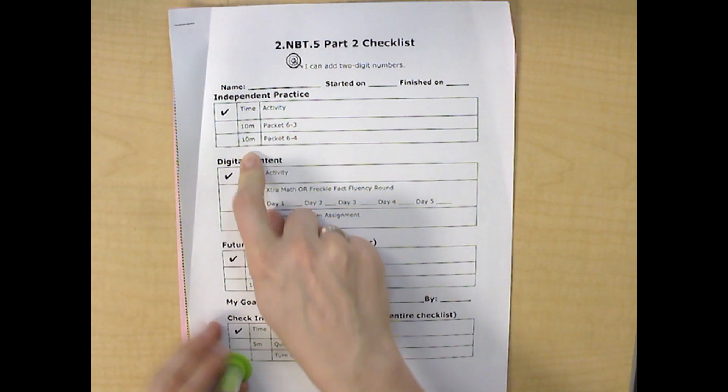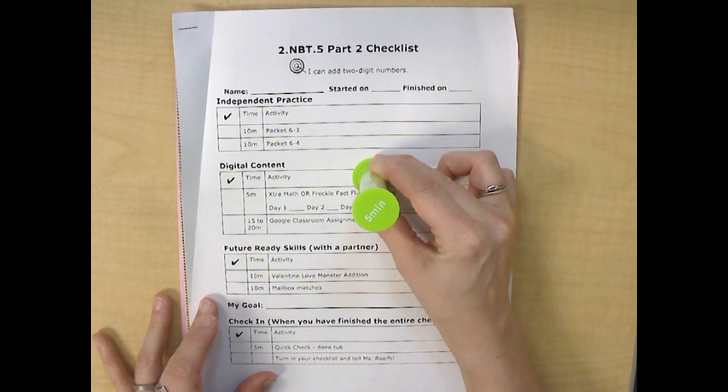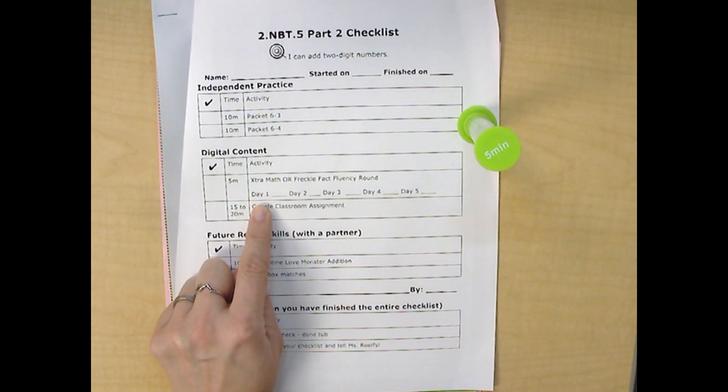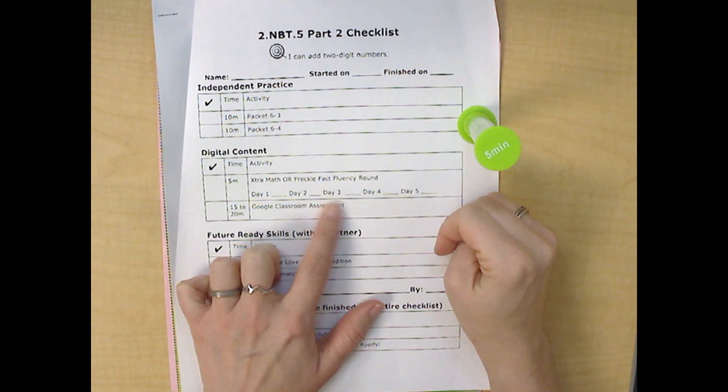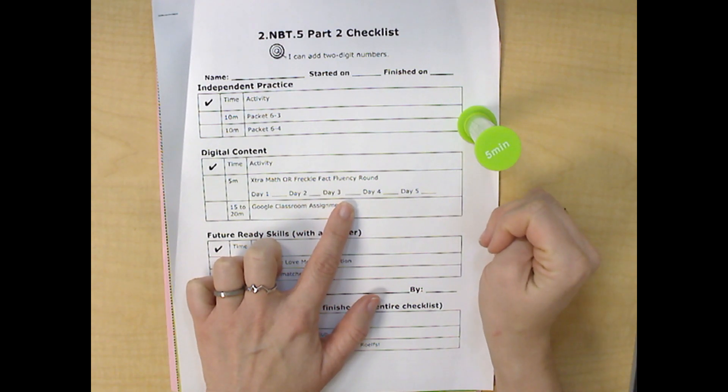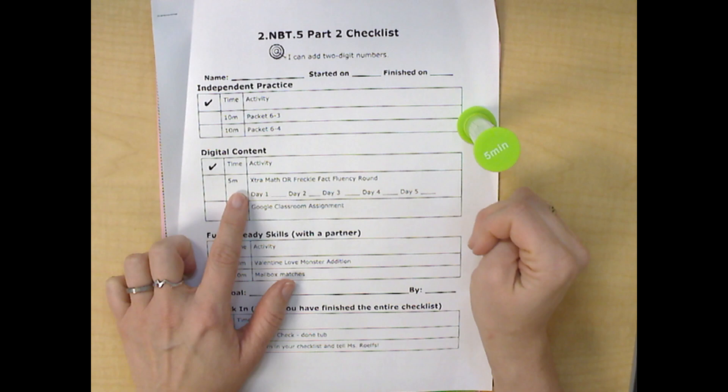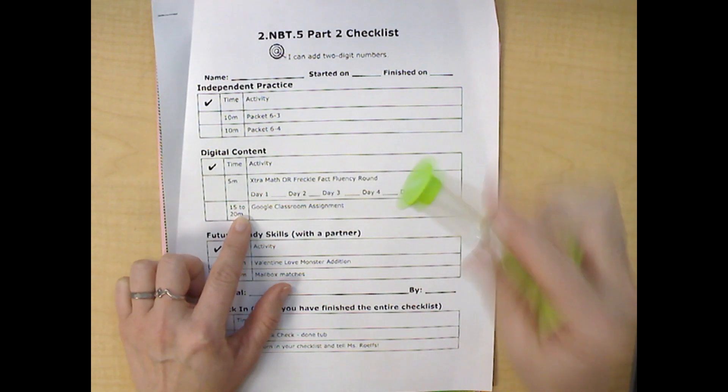These say 10 minutes. I want you to try to challenge yourself to do that. If it takes you a little longer, that's okay. Remember to use your timer. Next, you're going to do your fact fluency. Remember, if it's the first day of your packet, you're going to do day one. If it's the second day, day two. Third day, day three. Remember to try to get your packet done in three days. Your fact fluency should only take you five minutes. That's one turn.